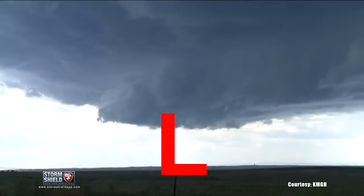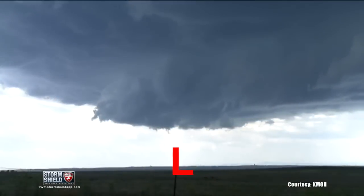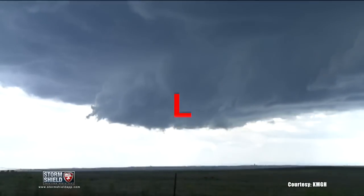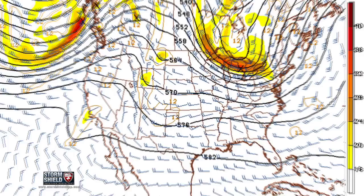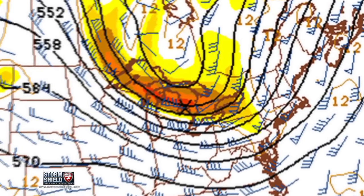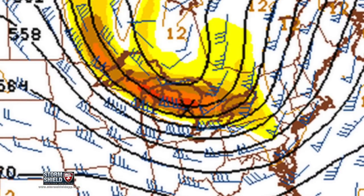These shortwaves are commonly responsible for thunderstorms. Think of a shortwave as a miniature low pressure system up about halfway in the atmosphere. You can usually find them on a 500 millibar weather chart. They spin counterclockwise, and this rotation creates lift.